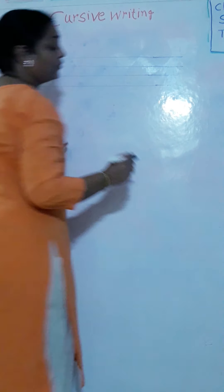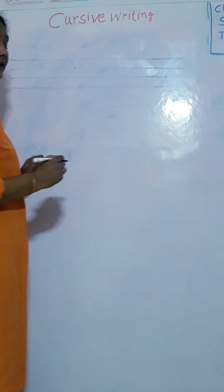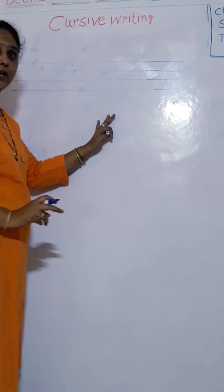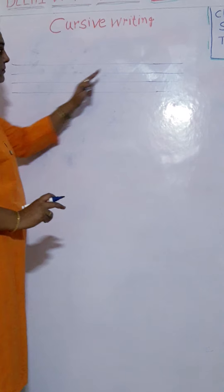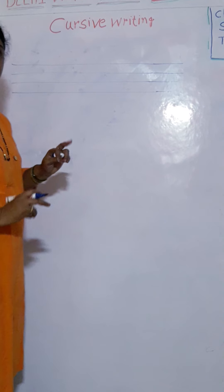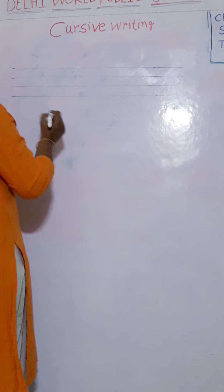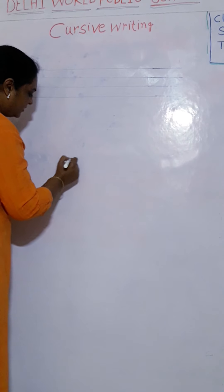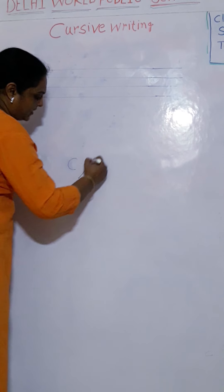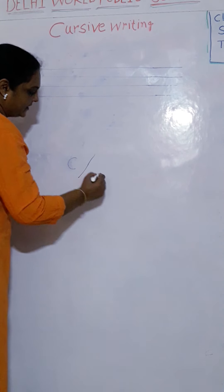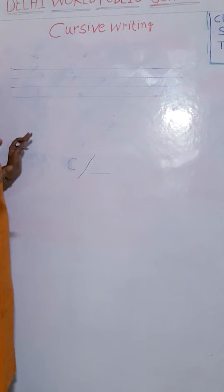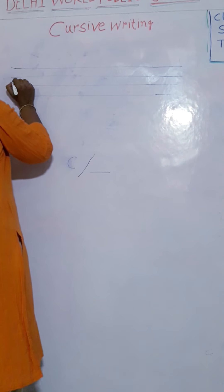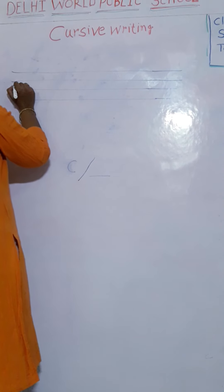A, B, C, D, E. You have to write in four lines. First three lines you have to write. Students, you know how to write a curve, slanting line, sleeping line — you know all these things, right? So start writing like this.